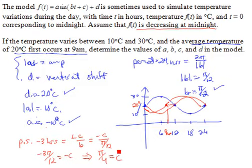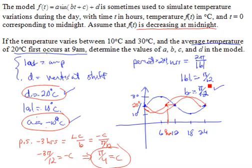And so that's the value of c that we need for our model, given that we chose a negative value for a, plus 20 for d, and a b value of pi over 12.